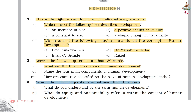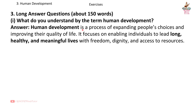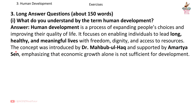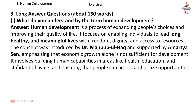Answer the following questions in not more than 150 words. Question 1: What do you understand by the term human development? Answer: Human development is a process of expanding people's choices and improving their quality of life. It focuses on enabling individuals to lead long, healthy and meaningful lives with freedom, dignity and access to resources. The concept was introduced by Dr. Mehboob Ul Haq and supported by Amartya Sen, emphasizing that economic growth alone is not sufficient for development.